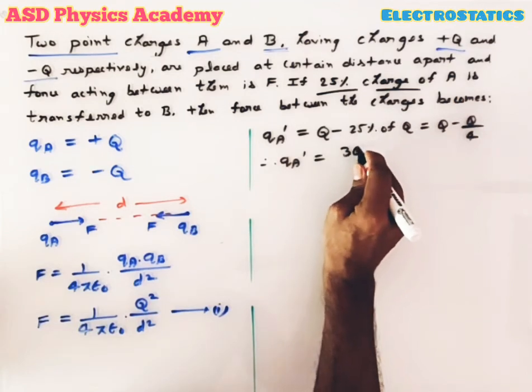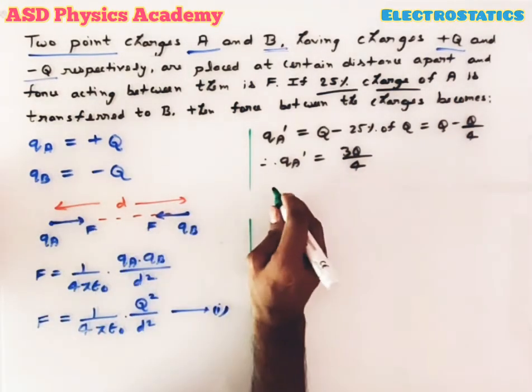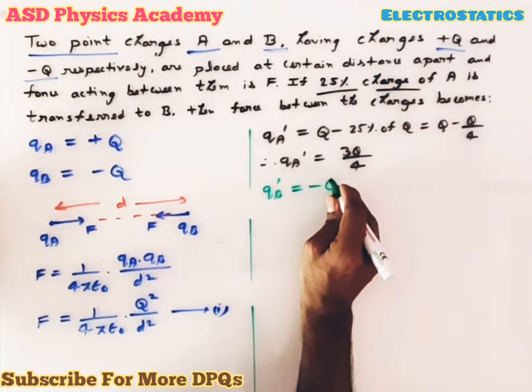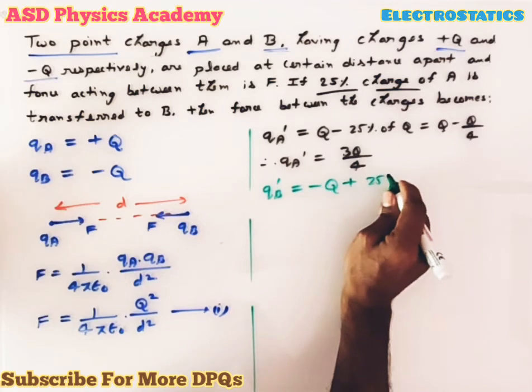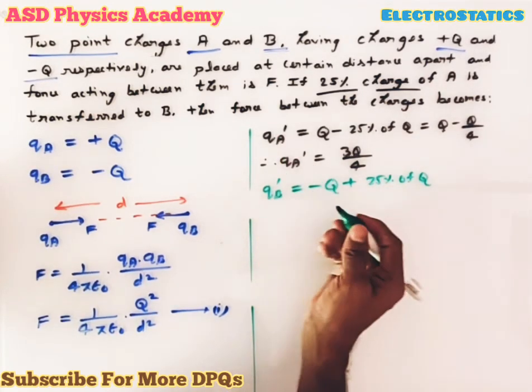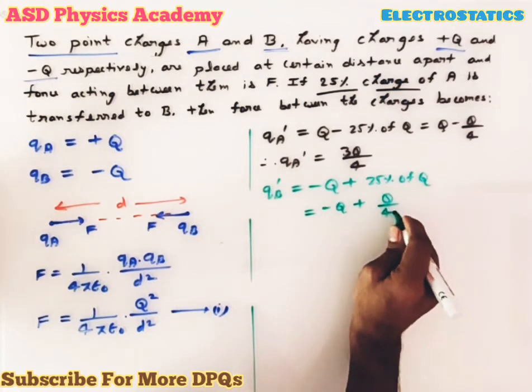Now this charge from A is added to point charge B. That means it is going to be -q + 25% of q, charge removed from A and added to B. That means again it is going to be -q + q/4.